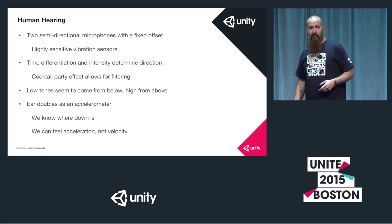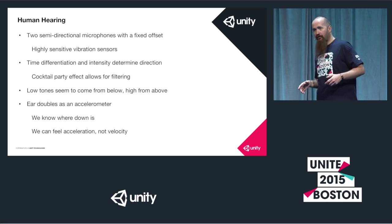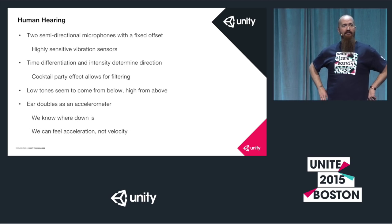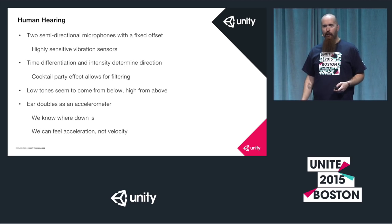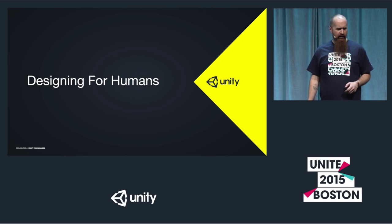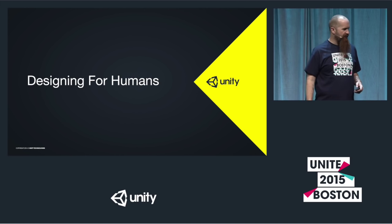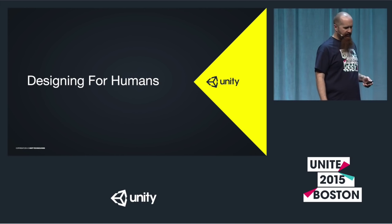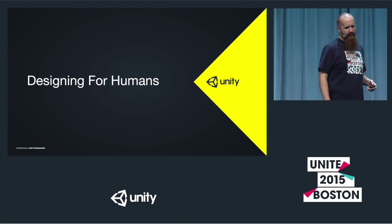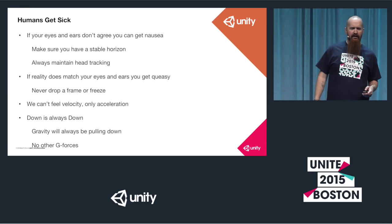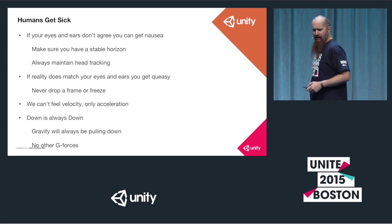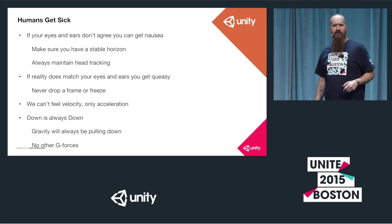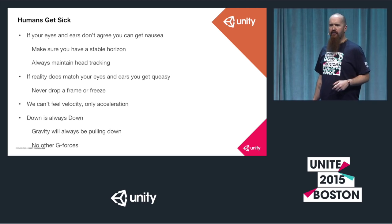I just did a demo where we were yawing back and forth and I was trying to stand still - very, very challenging, because all my visual system was overriding my ears. Now that we've described humans in mechanical terms, let's talk about designing for humans. Humans get sick very easily - very weak meat bags. If the eyes and ears don't agree, nausea is a common occurrence.